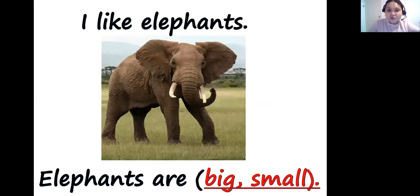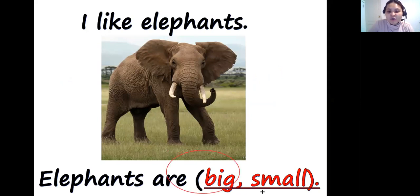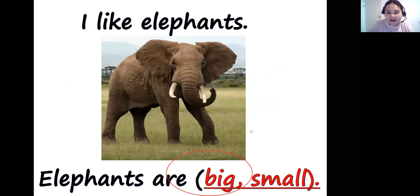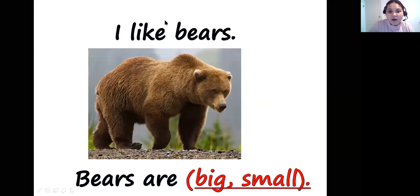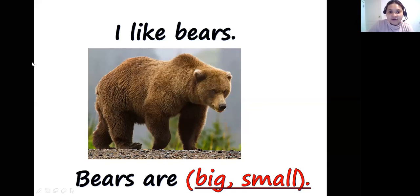We have to circle the right description. For example: elephants are big or small? Elephants are big, so circle the word big. What about bears — big or small? Bears are big too, they are not small, so circle big.